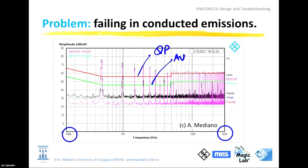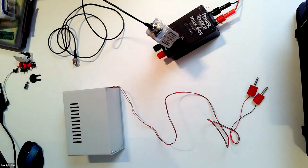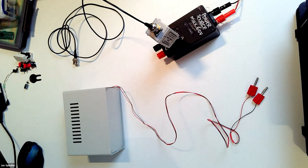You have applied all the EMC techniques you know, but the peaks are over the limits and you need to introduce some filter. You can see I have my box with the power supply cable, and I have a line impedance stabilization network. I have 15 volts as the power supply for my system, and I am sending the signal from the LISN to my oscilloscope with a coaxial transmission line.